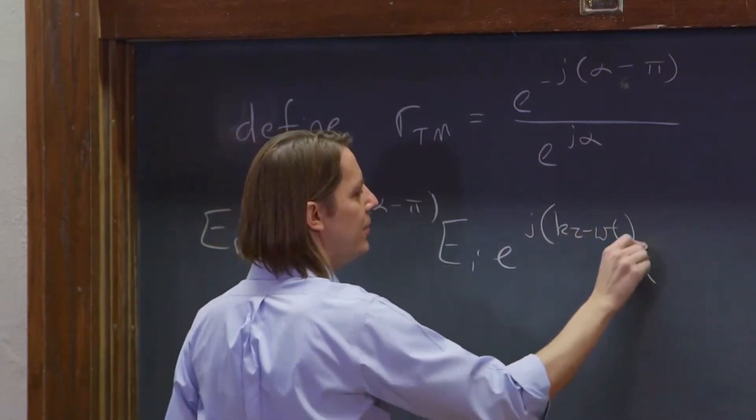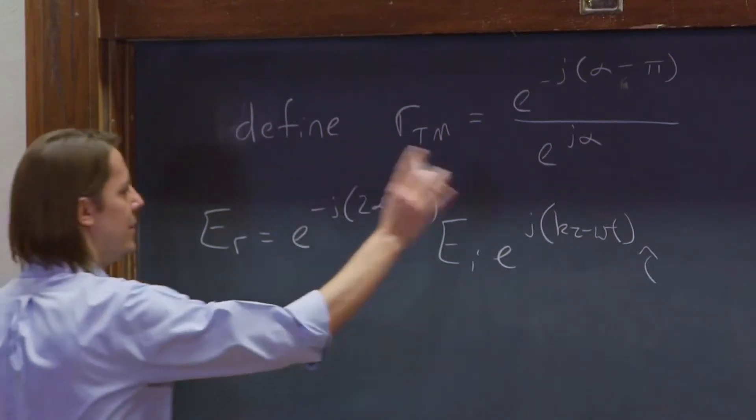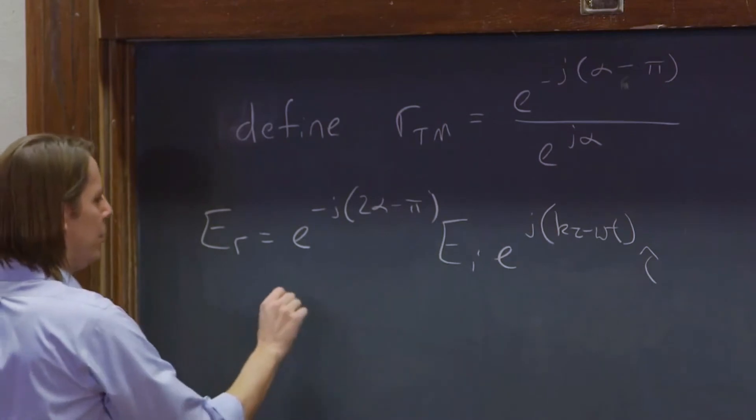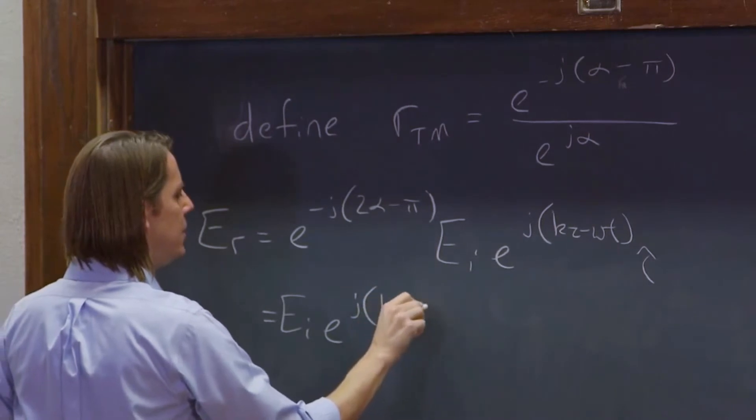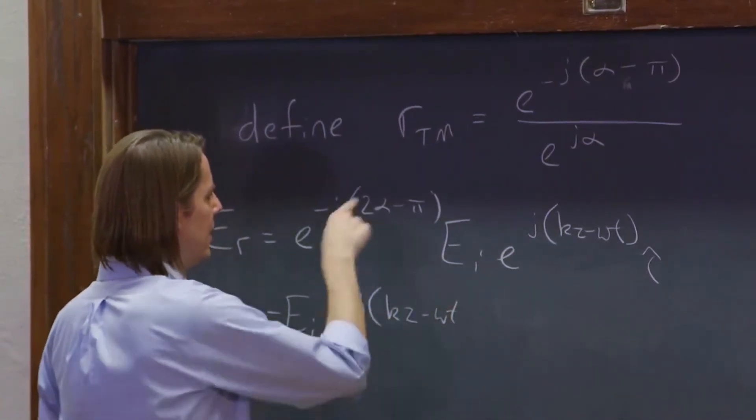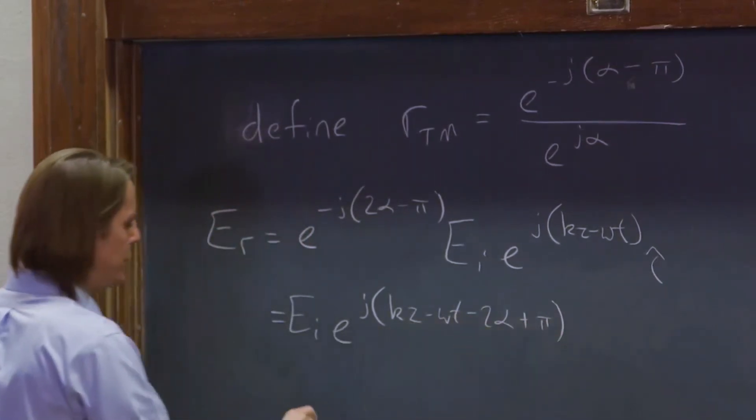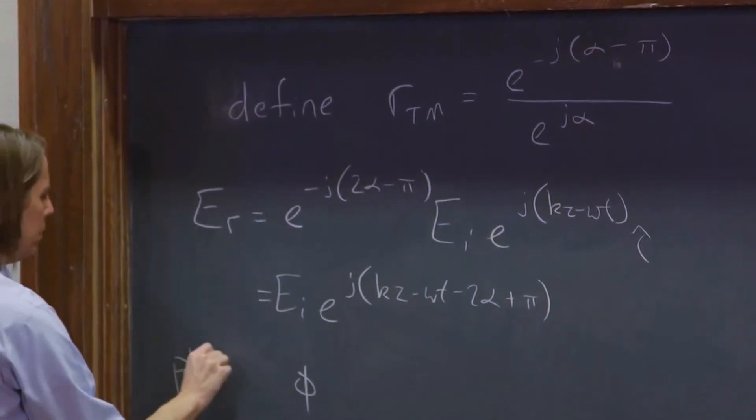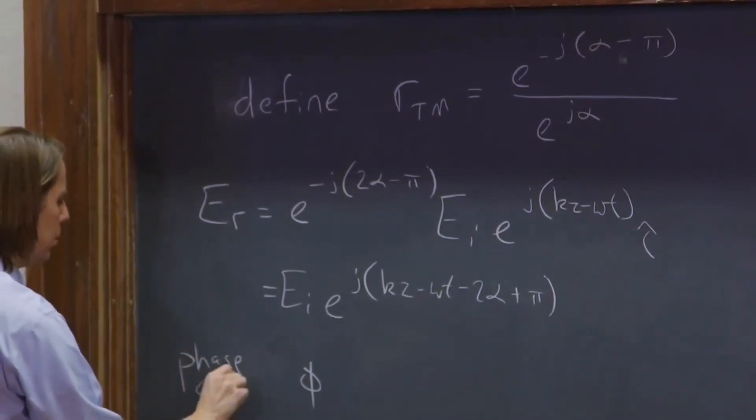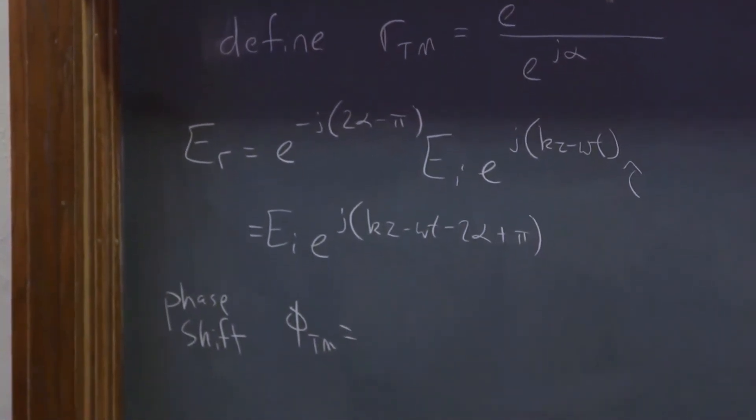If we imagine a plane wave along the z direction polarized along the x direction. And then this can just come back there, where it'll be e_i e to the j kz minus omega t, and then minus 2 alpha plus pi. So there's your phi, your phase shift, TM mode is minus 2 alpha plus pi.